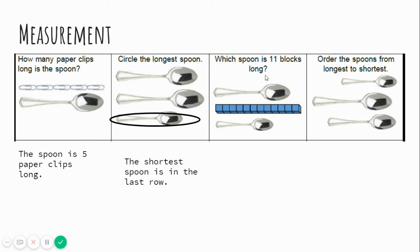Which spoon is 11 blocks long? Let's count one, two, three, four, five, six, seven, eight, nine, ten, eleven. The longer spoon, the top spoon, is 11 blocks long. The bigger spoon is 11 blocks long.